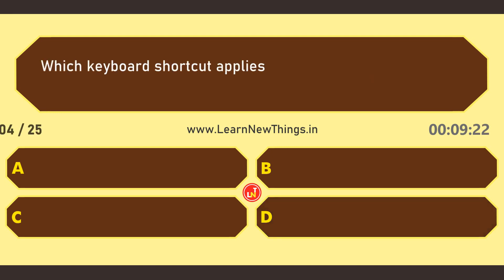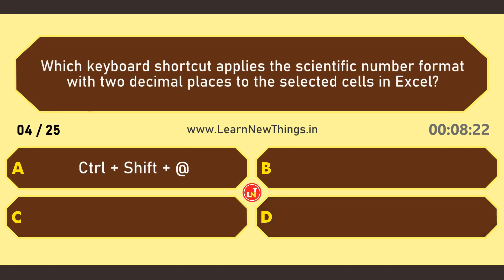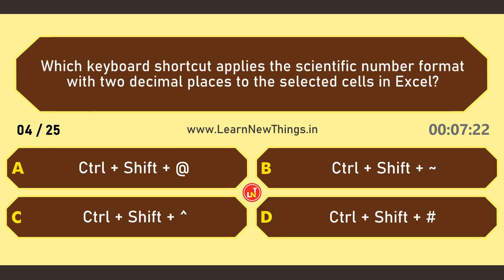Which keyboard shortcut applies the scientific number format with two decimal places to the selected cells in Excel? CTRL+SHIFT+CARET.